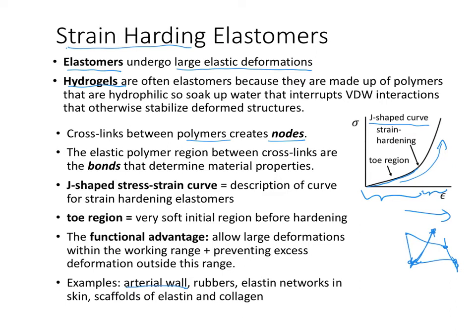Strain hardening is often a natural function of the material property. Other examples are rubbers, the elastin networks in our skin, and scaffolds used in tissue engineering made up of either elastin or collagen.